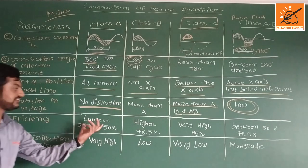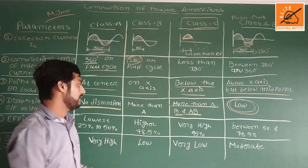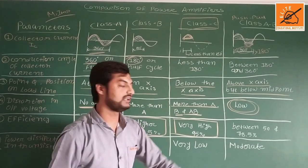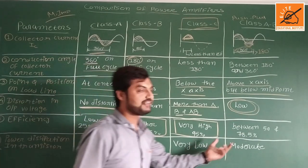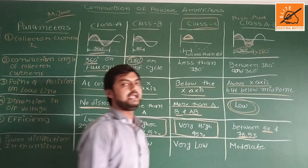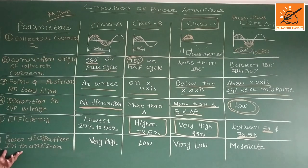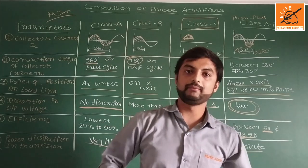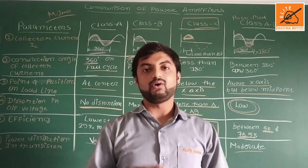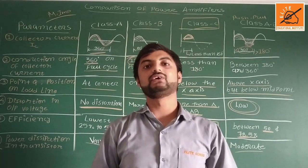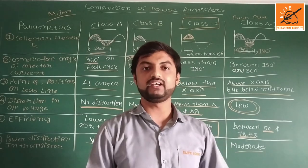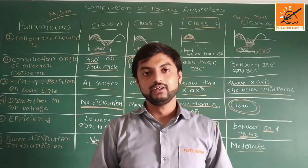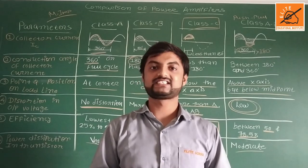Efficiency: class A has the lowest efficiency at 25% to 50%. Class B is higher at about 78.5%. Class C has the highest efficiency at about 95%. Class AB, being a combination of class A and class B, falls in between at 50% to 78.5%. Power dissipation in the transistor: very high for class A, low for class B, very low for class C, and moderate for class AB. You have to remember all these parameters as this comparison of power amplifiers is a very important topic, and the class AB or push-pull amplifier from the previous lecture is also very important. We are going to complete this chapter here and start a new chapter in the next lecture. Thank you so much.